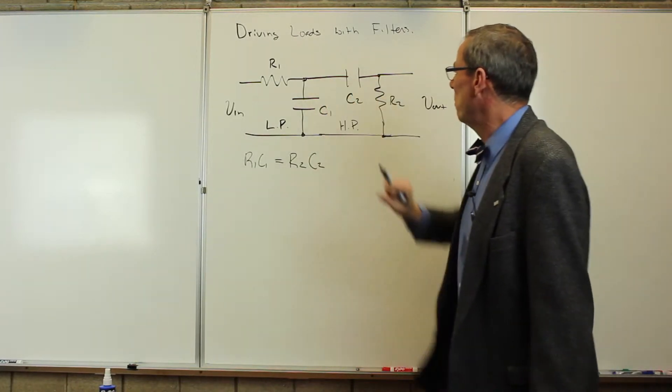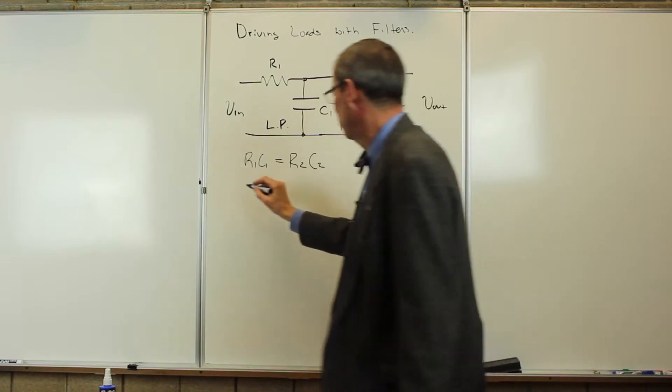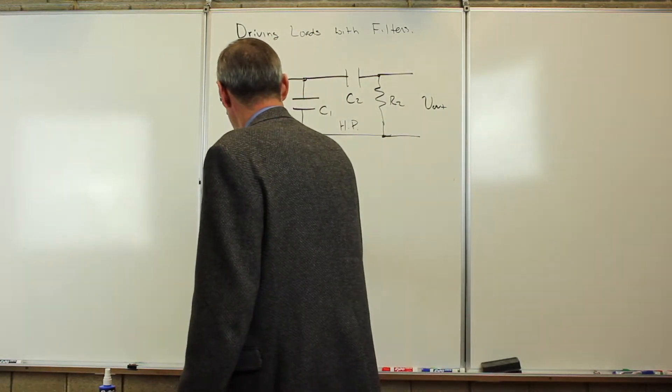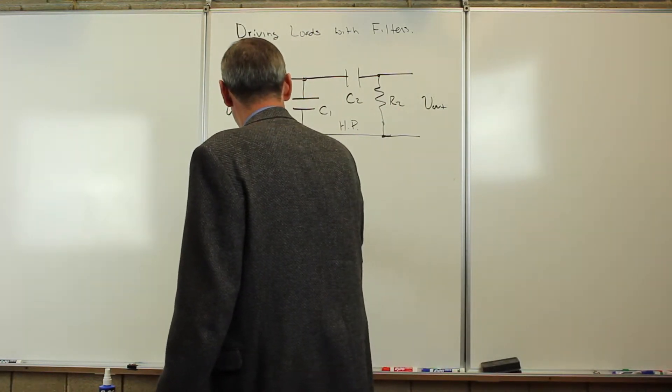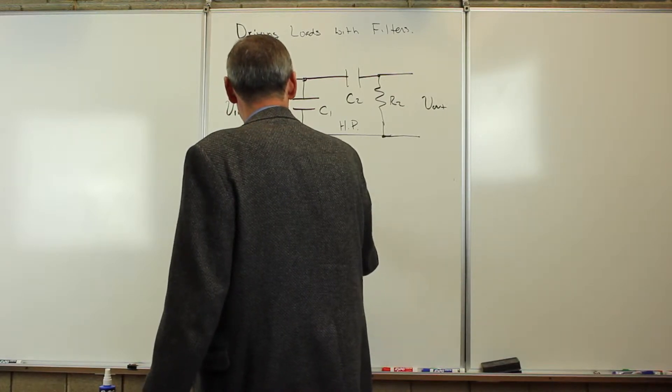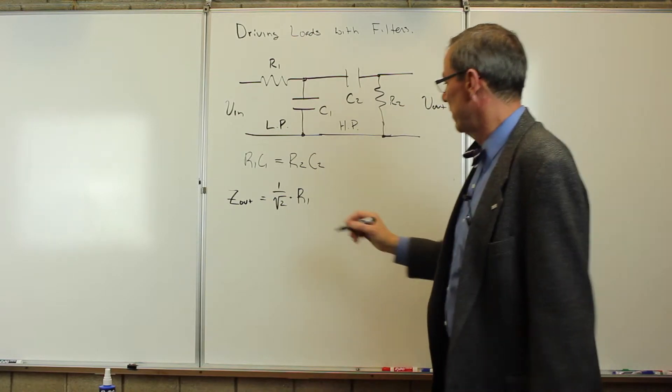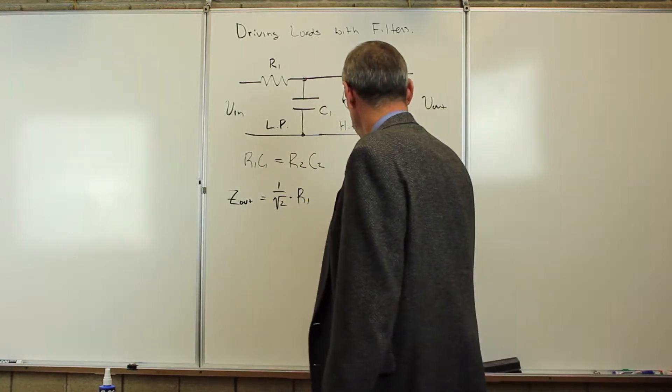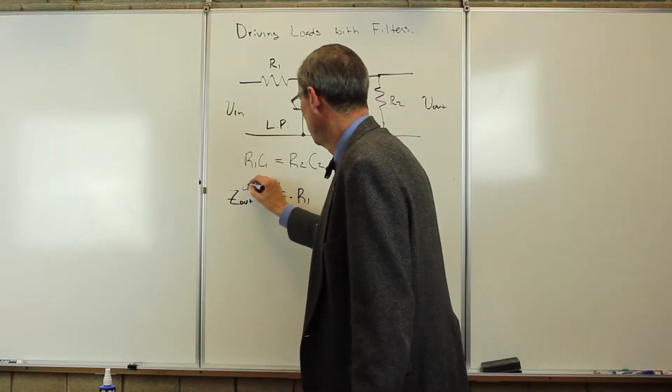So, we need to look at the output impedance of the low-pass filter. Zout is 1 over the square root of 2 times R1 and the input impedance of the high-pass filter, Zin, so that's the low-pass.